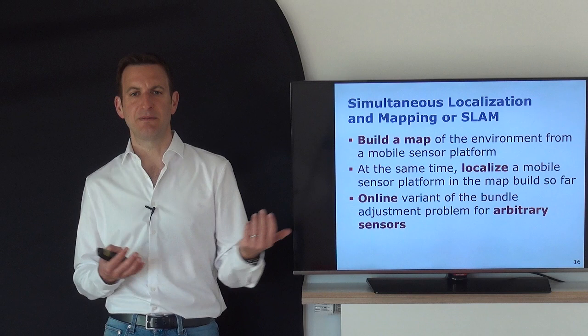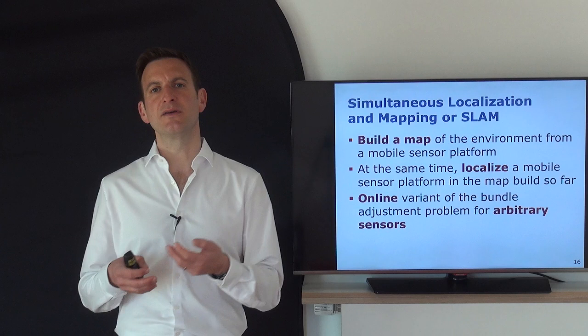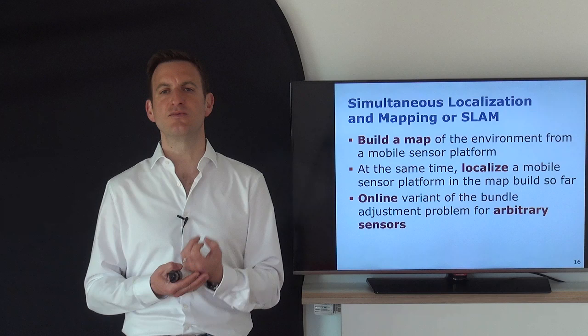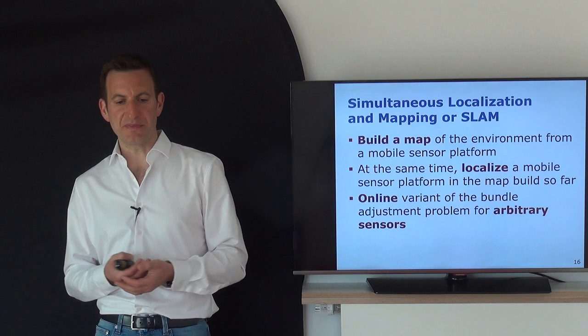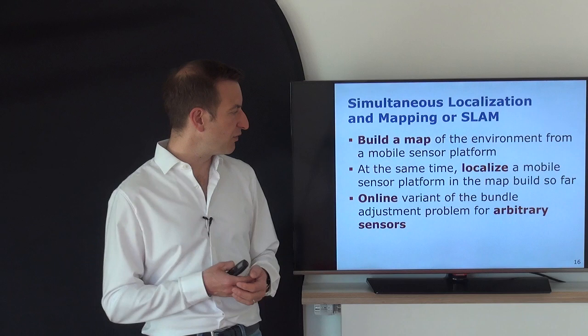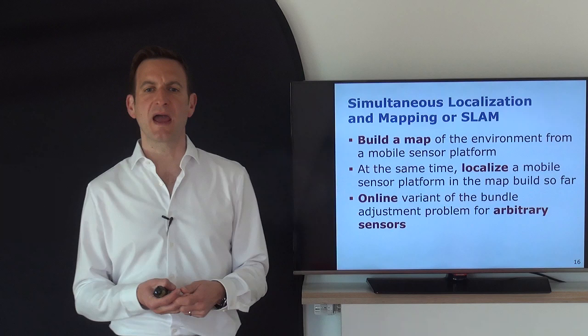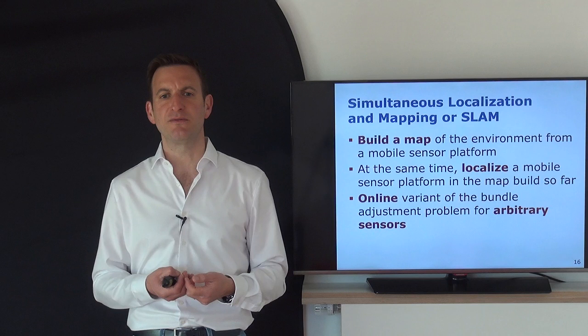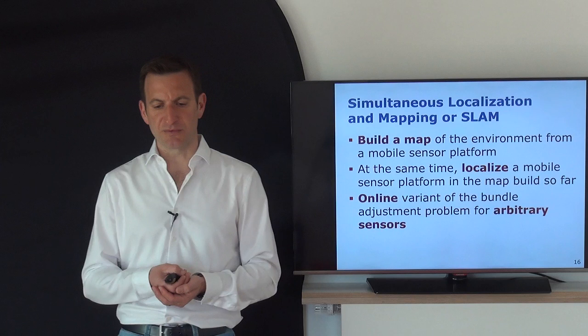For example, a self-driving vehicle needs to build an environment model and estimate its own pose online in real time to make decisions about where to go. This is called online SLAM. It is closely related to the bundle adjustment problem, which is basically the SLAM problem for cameras using only camera observations. SLAM can be formulated in a more general form taking into account different sensing modalities and motions, but all those problems are extremely similar.